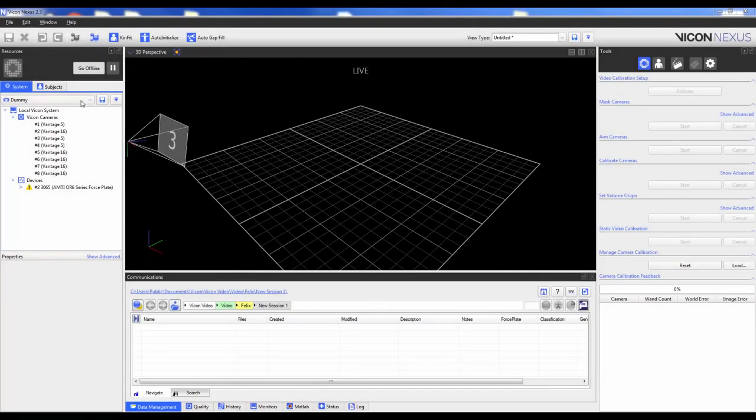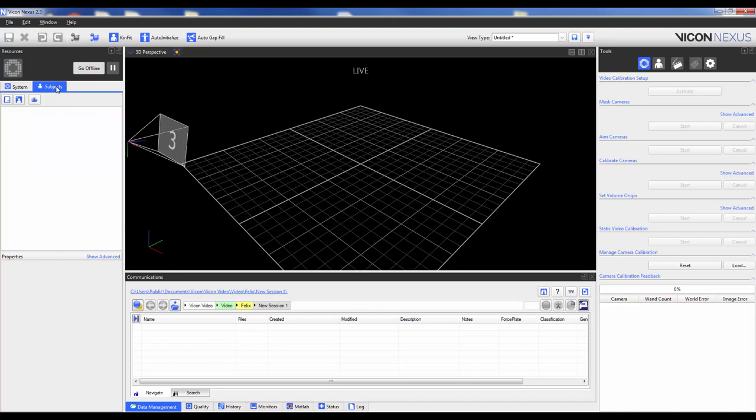When setting up your subject make sure you're in the subjects tab within the resources pane. Down below you will see that there are three icons for creating your subject. These will only be active so long as you are in an active session. For more information on how to create a session please see the video on Pro Eclipse.